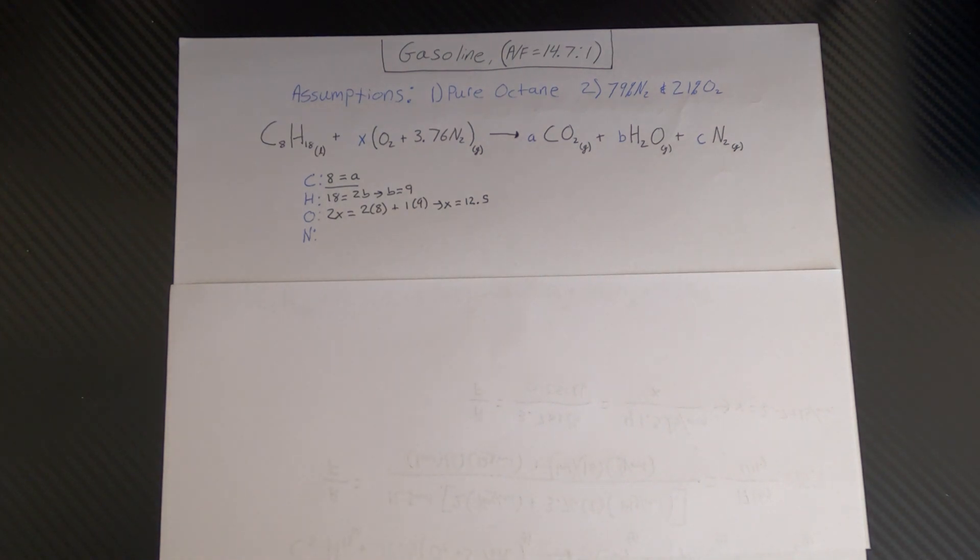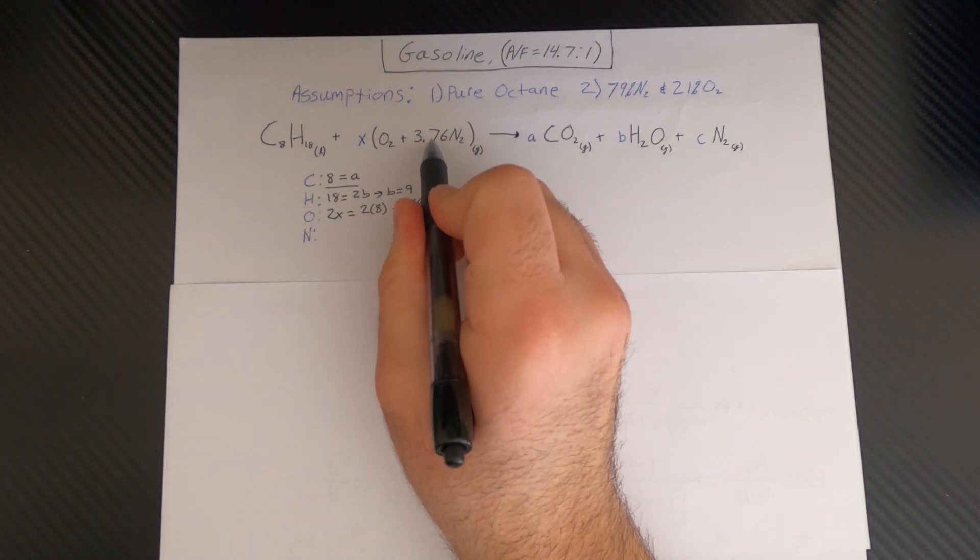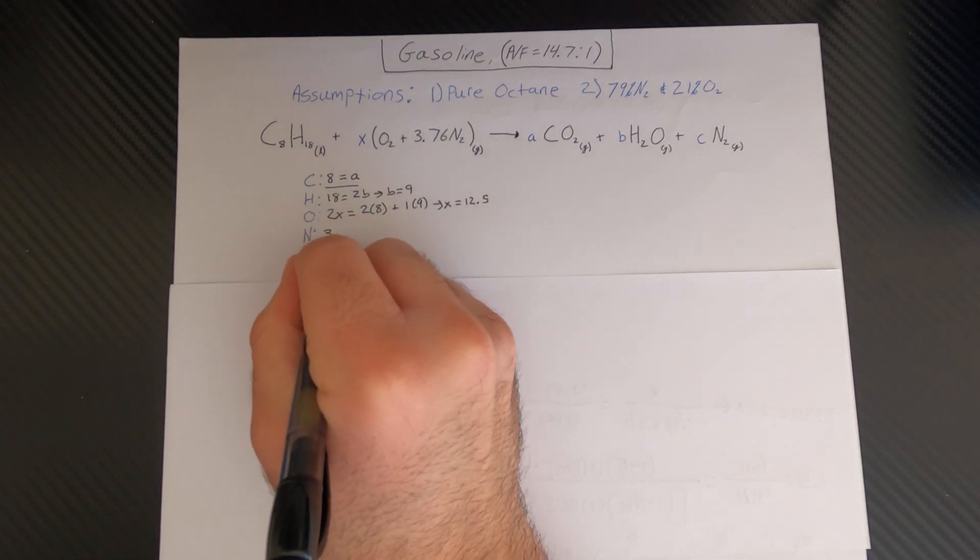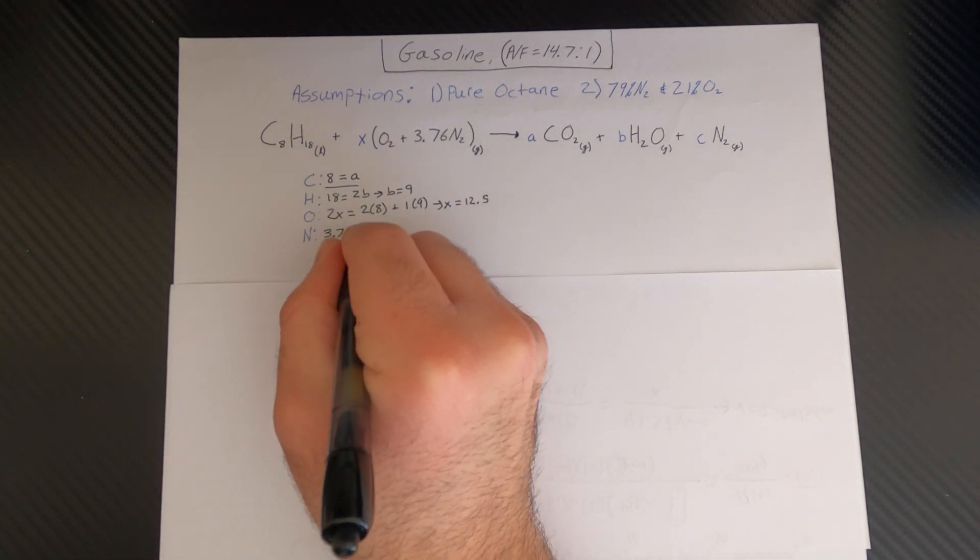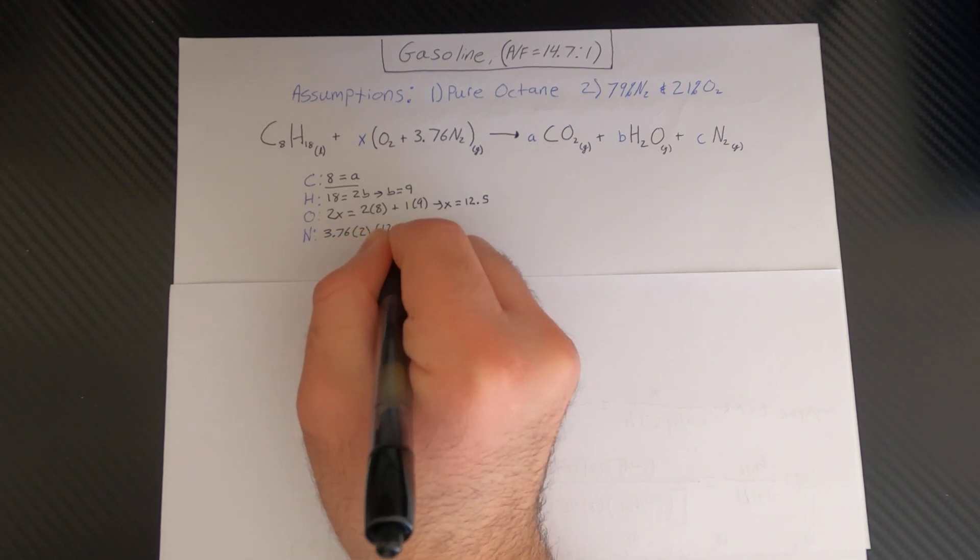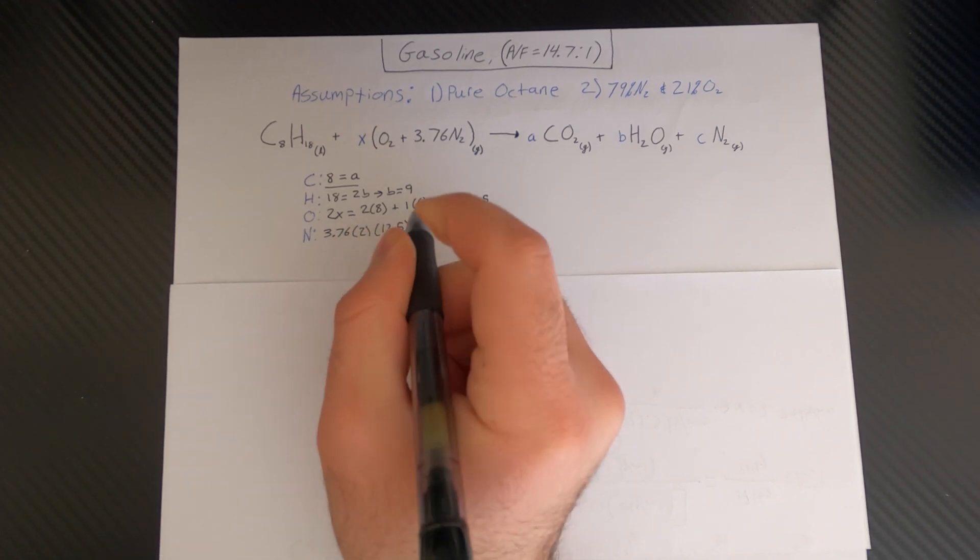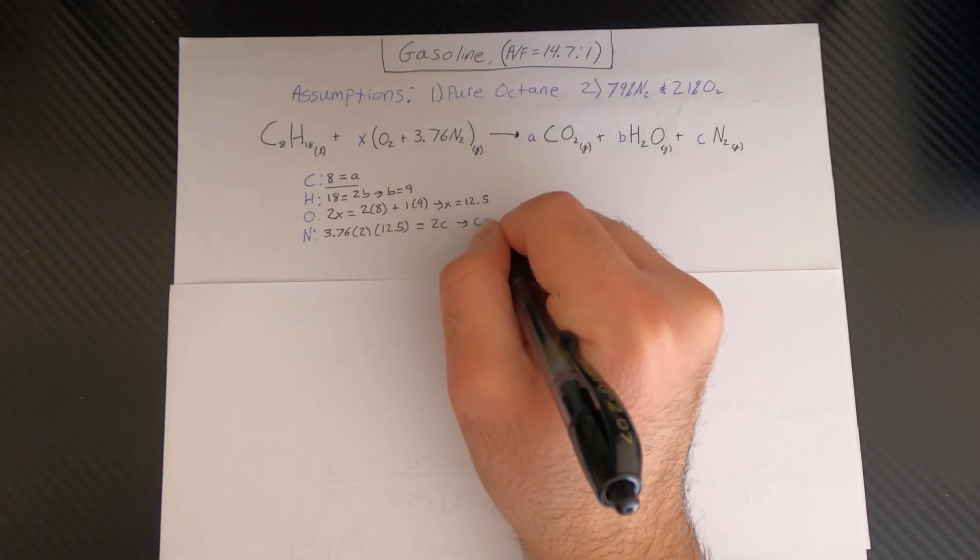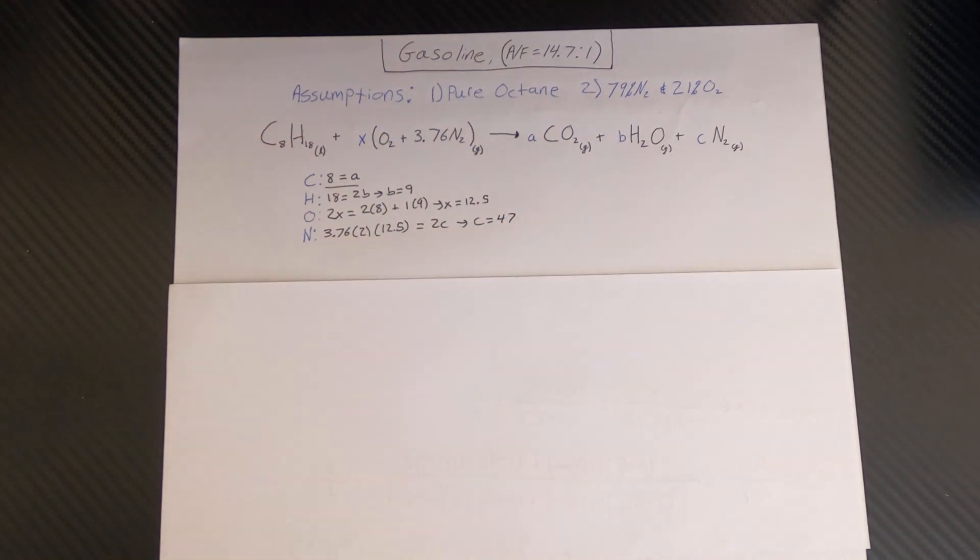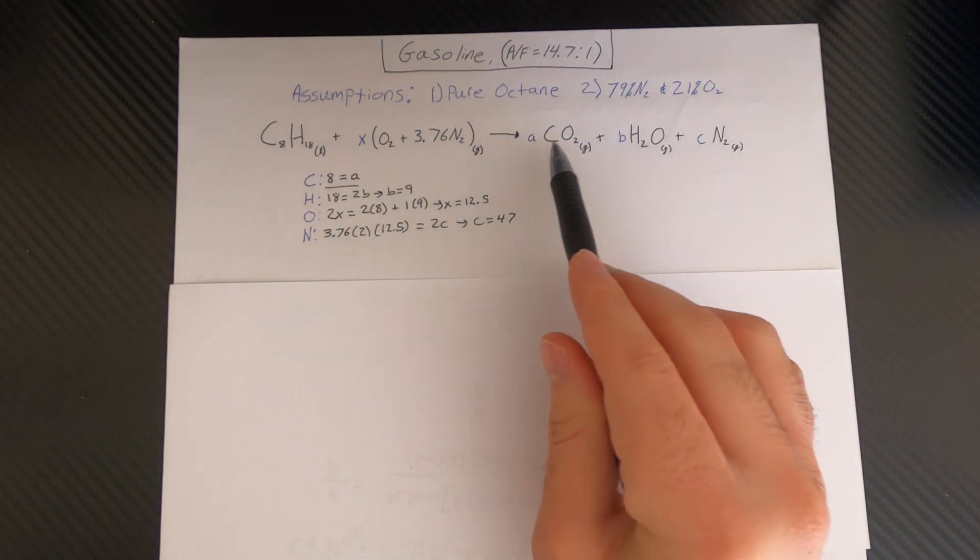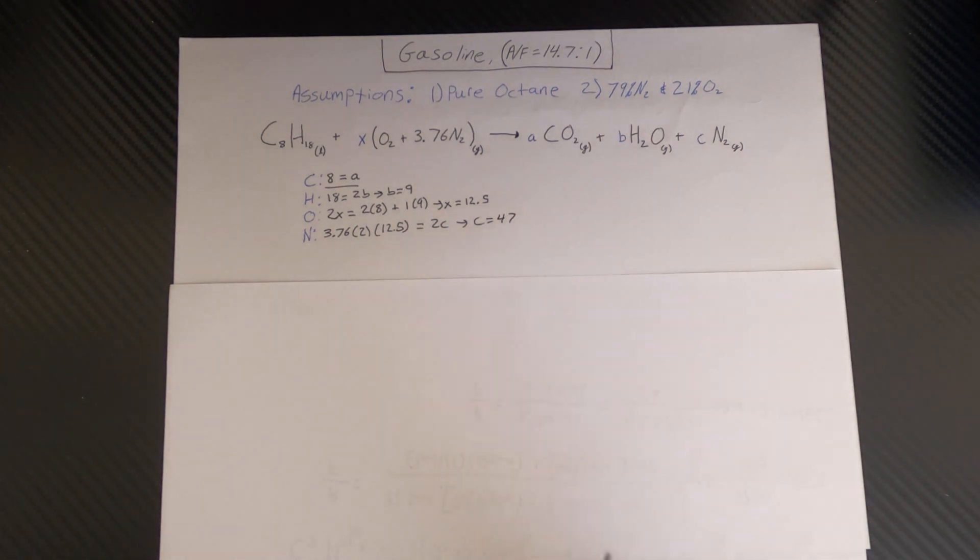And lastly we'll have to solve for nitrogen, so we have two times 3.76 times X. So we can go ahead and plug in all those numbers right away: 3.76 times two times 12.5 equals two times C. And if you go ahead and solve here we get C is equal to 47. Now once we do that we can go ahead and replace A, B, C, and X with these values.